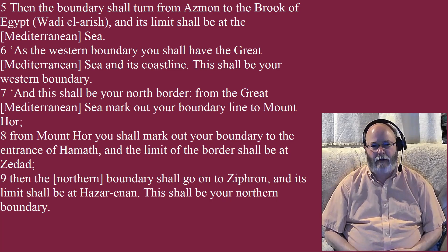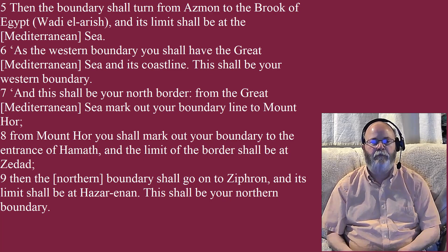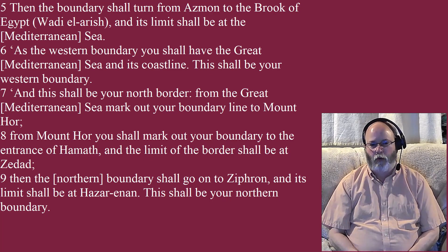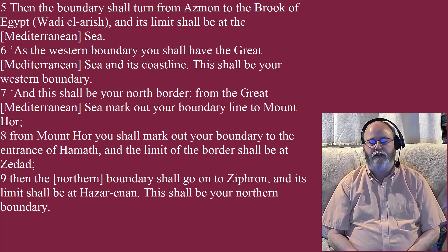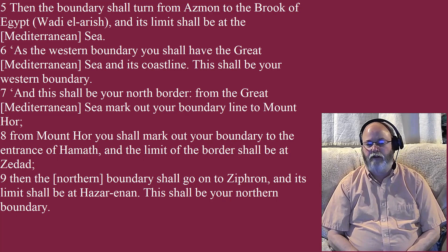As the western boundary, you shall have the great Mediterranean Sea. Mark out your boundary line to Mount Hor. From Mount Hor, you shall mark out your boundary to the entrance of Hamath, and the limit of the border shall be at Zidad. Then the northern boundary shall go on to Ziphron, and its limit shall be at Hazar Enon. This shall be your northern boundary.